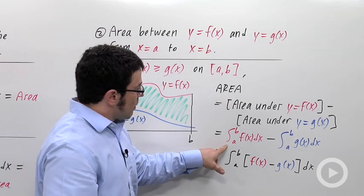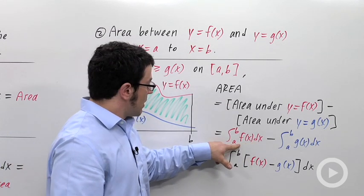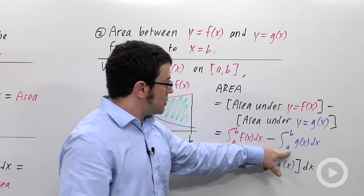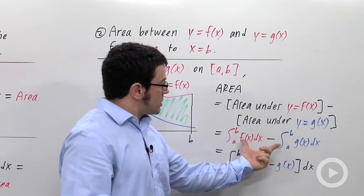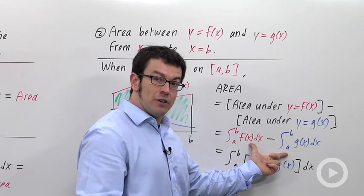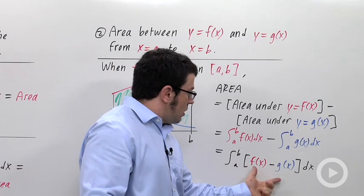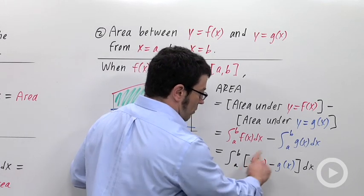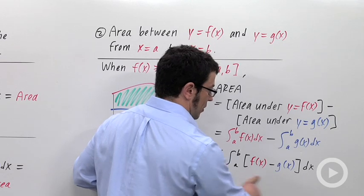and each of those areas can be represented by integrals. So this is the area under f of x, this is the area under g of x, and we subtract. Of course, it turns out that you can write this difference of integrals as the integral of the difference of the functions. So in one integral, you can get the entire area between two curves.